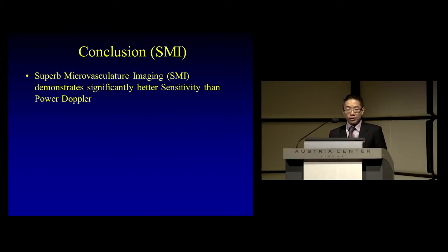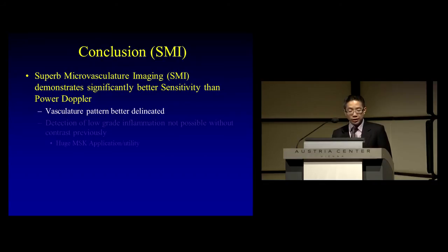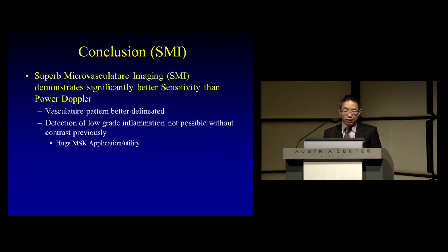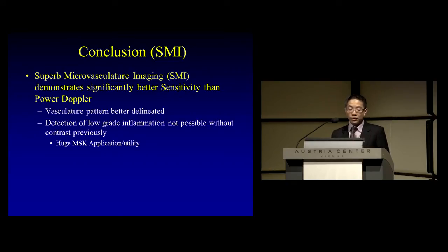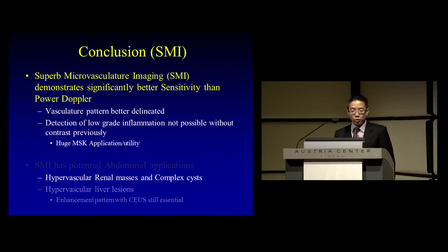In conclusion for SMI: superb microvascular imaging has much better sensitivity than Power Doppler, and the microvascular pattern is much better delineated. Its strongest clinical potential is in detecting low-grade inflammation not previously possible without contrast or Power Doppler, in a setting of arthritis or tendonitis. It also has potential abdominal applications, perhaps most notably for renal masses where it is important to know whether the lesion is hypervascular.